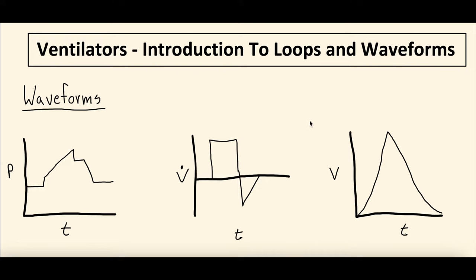Today we're going to dive into the interesting topic of loops and waveforms on the ventilator. Patients who are on mechanical ventilation get different waveforms from the machine. Particularly today we're going to be talking about the pressure, flow, and volume waveforms, and then loops — specifically flow-volume loops and pressure-volume loops. This is going to be an introduction to those topics: the shape of them, what each part of the shape means, and what you can gain clinically from those things.